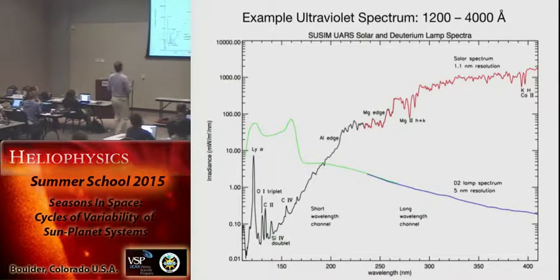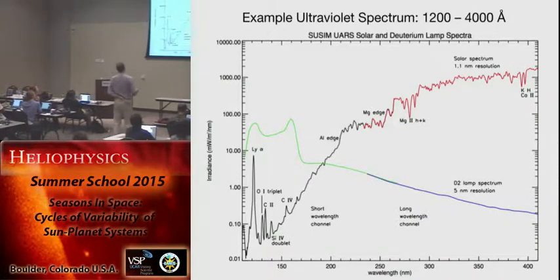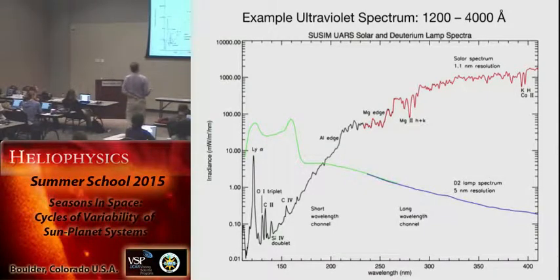Let's go up a little more in wavelength to the ultraviolet spectrum, which starts at about 1200 angstroms or 120 nanometers and peaks around 4000 angstroms — basically the visible. The spectrum is a combination of some emission lines and a very strong continuum. On a logarithmic plot, it goes up by orders of magnitude as you go from emission lines at 1200 angstroms up to the continuum at 400 nanometers. This data is from the SUSIM instrument on UARS.